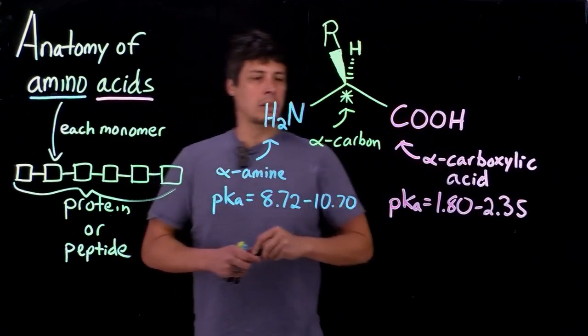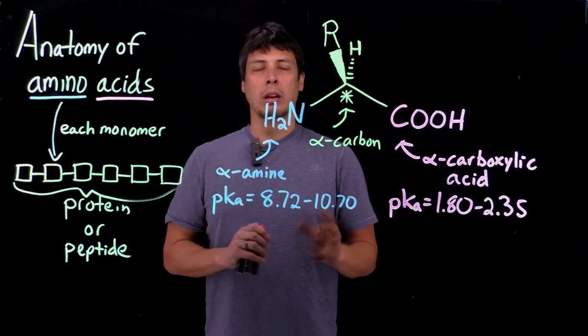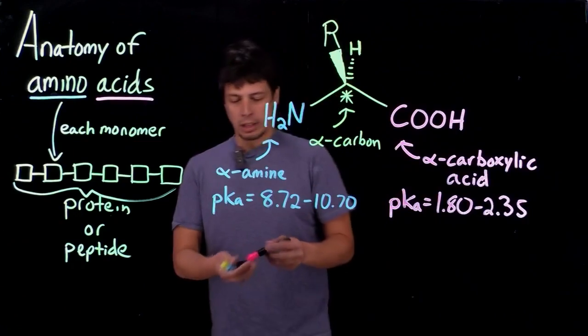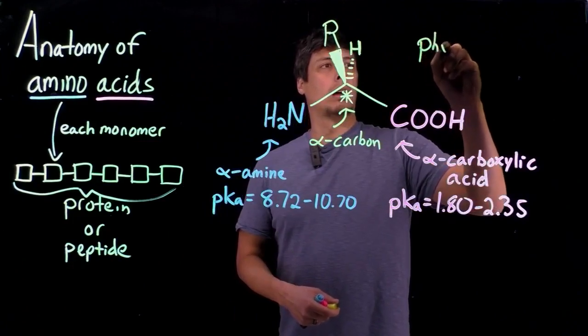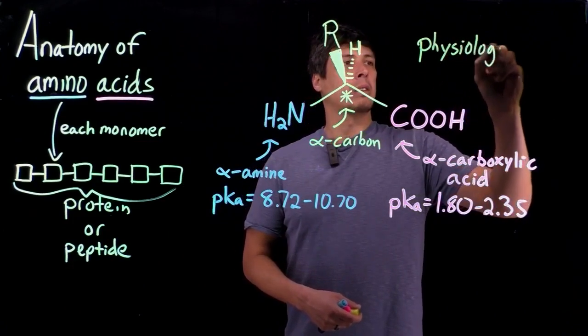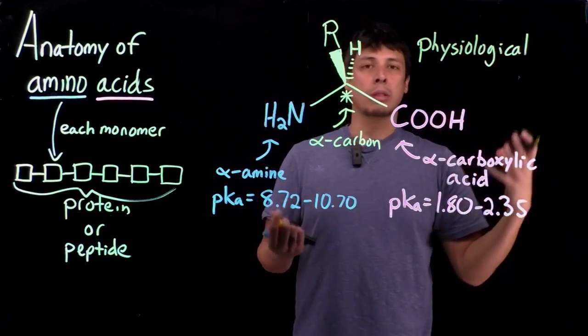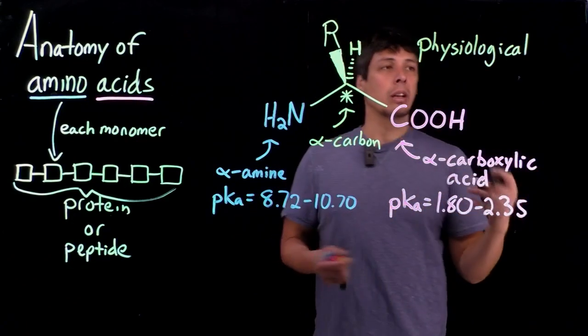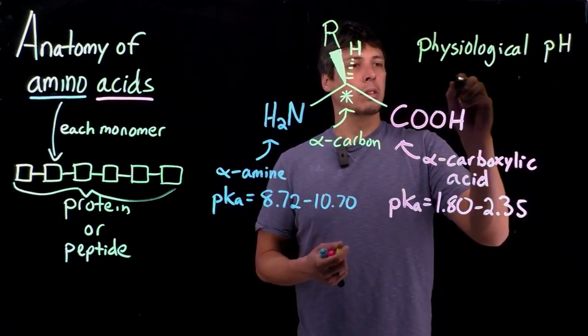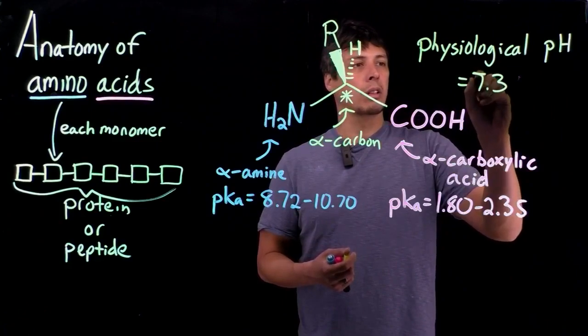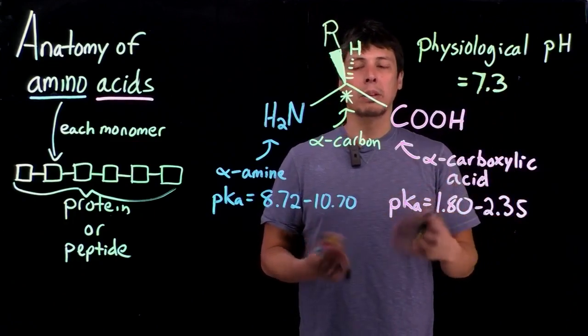So, what that means is that the protonation states of these two groups is going to be dependent on the pH of the surrounding environment. Now, physiological pH tends to occur at pH 7.3. So, bacteria or other cells can be happy at a range of pHs, but we tend to think of physiological pH surrounding around a pH of 7.3. So, we'll use that as our standard for this class, although, be aware that organisms can be happy at different pHs.